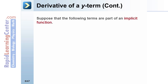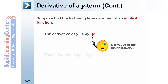Suppose that the following terms are part of an implicit function. The derivative of y to the fourth would be 4y cubed times y prime, where y prime is the derivative of the inside function. The derivative of 2y is 2 times y prime. The derivative of e raised to the y power is e to the y times y prime.